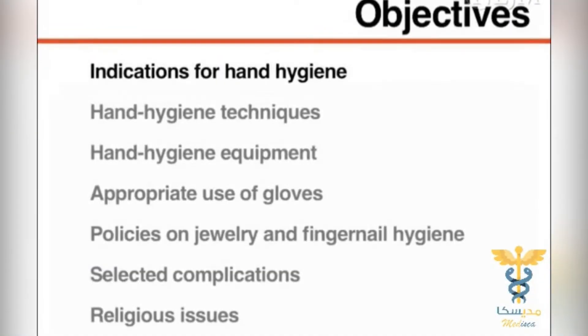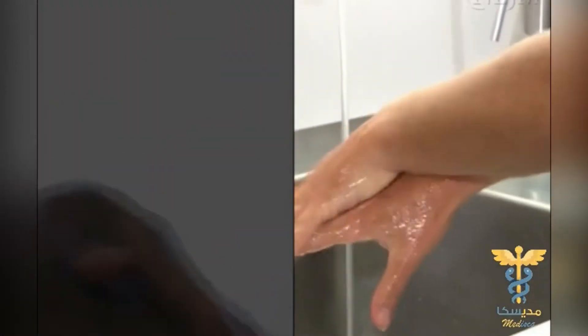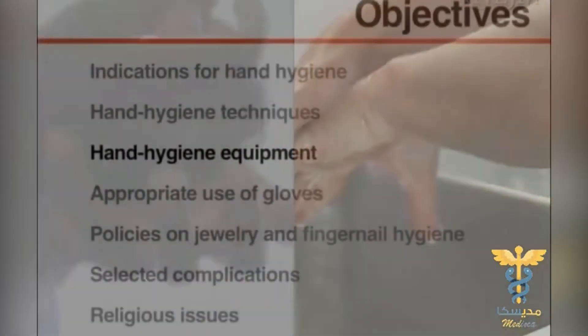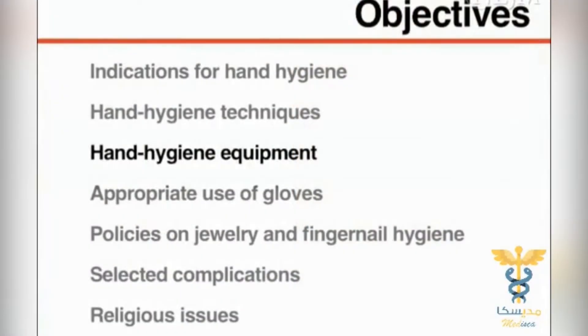This video will demonstrate the various indications to perform hand hygiene as well as two different hand hygiene techniques: hand rubbing with an alcohol-based hand rub formulation and hand washing with soap and water. This video will also review hand hygiene equipment, the appropriate use of gloves, and policies on jewelry and fingernail hygiene.